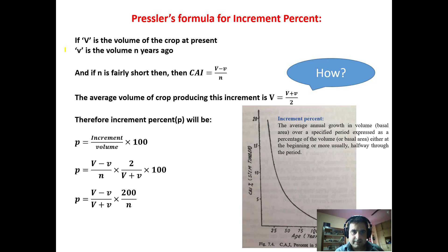Welcome back. Now we will discuss Pressler's formula for increment percent. Pressler gave a formula for increment percent. If V is the volume of the crop at present (capital V) and small v is the volume n years ago, and n is fairly short, then the current annual increment is capital V minus small v upon n.